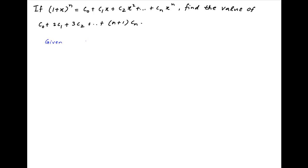The standard binomial expansion of (1 + x)^n is equal to C0 plus C1·x plus C2·x² plus and so on. The last term is Cn times x raised to the power n.